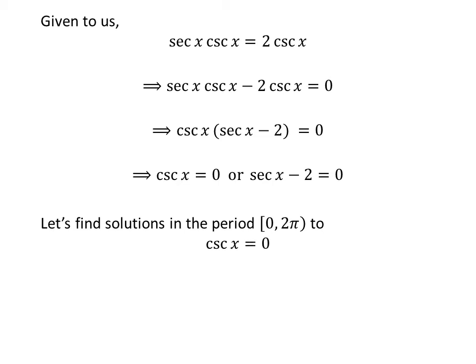Let us first find the solutions to the equation cosecant of x is equal to 0 in the period of 0 to 2 times pi, as the cosecant function is a periodic function with a period of 2 times pi.